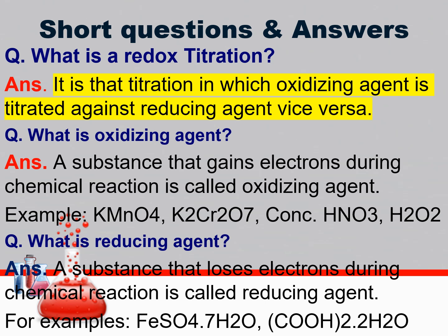After observation and calculation, here are some short questions and answers relating to this redox titration. First question: What is redox titration? It is a titration in which an oxidizing agent is titrated against a reducing agent, or vice versa. What is an oxidizing agent? A substance that gains electrons during a chemical reaction is called an oxidizing agent.